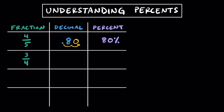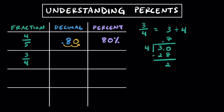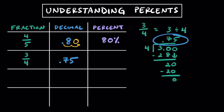Now let's try the fraction 3 to 4. Dividing 3 by 4, we find out that that's equal to 0.75, and that's the decimal version. If we read this decimal properly, instead of saying 0.75, we can say 75 hundredths, and that's actually going to be the percentage, because it's per 100. 0.75 is equivalent to 75%.